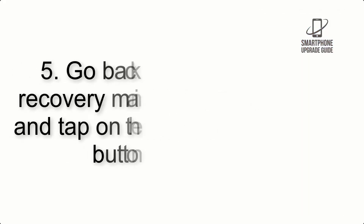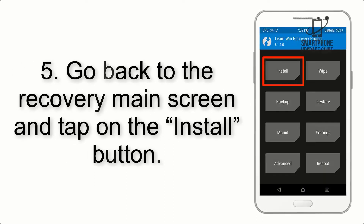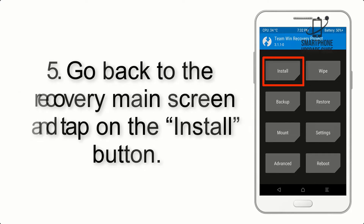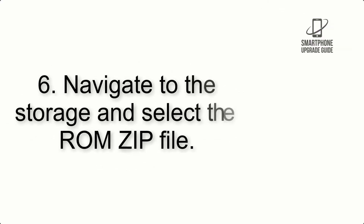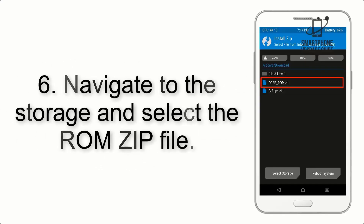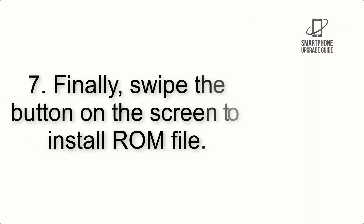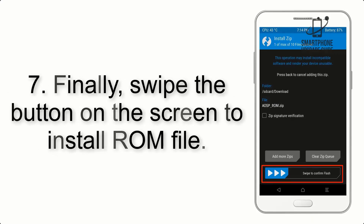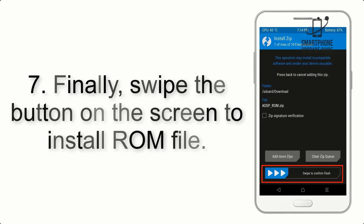Step 4: Swipe the button to wipe the device. Step 5: Go back to the recovery main screen and tap on the Install button. Step 6: Navigate to the storage and select the ROM zip file.